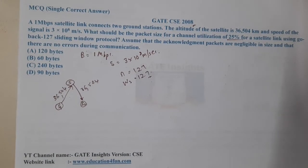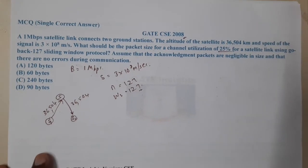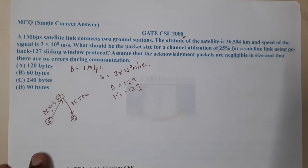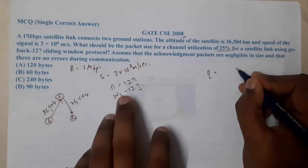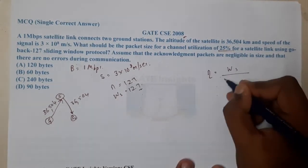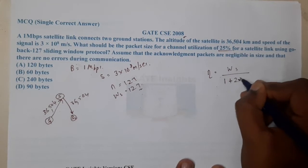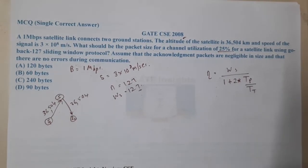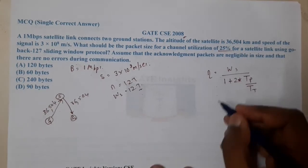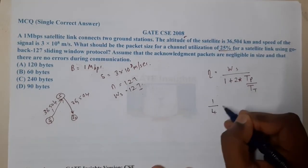This is an efficiency question. If you recall the formula, efficiency equals window size divided by (1 + 2×Tp/Tt). The efficiency value is 1/4, which equals 0.25, and the window size is 127.